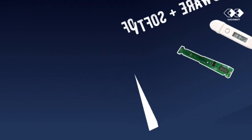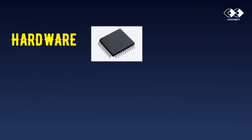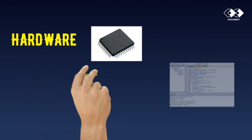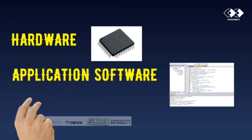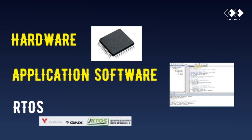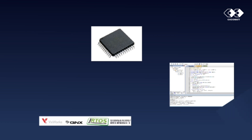Majorly, an embedded system has three components: hardware, application software, and a real-time operating system (RTOS) — though a small-scale embedded system may not have RTOS.